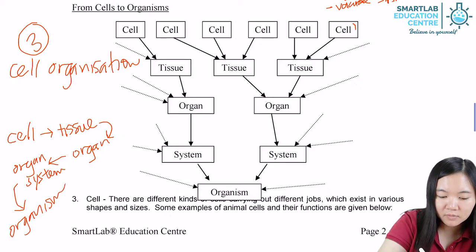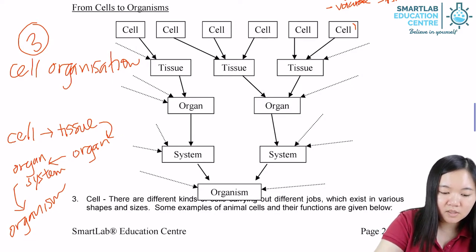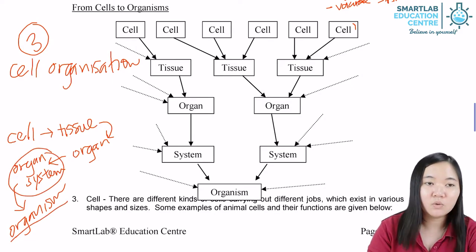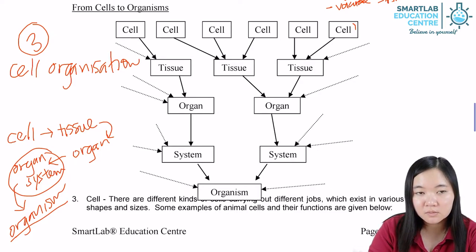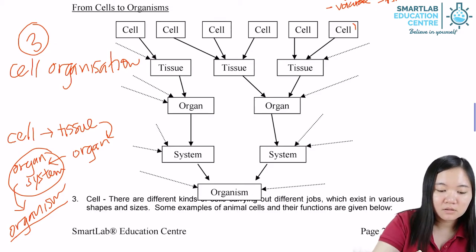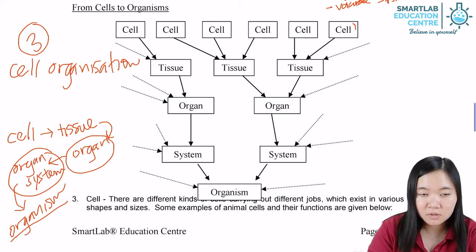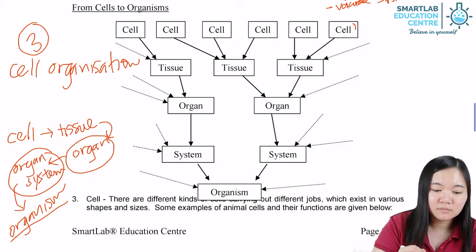That is you and me. In you and me, we have different systems such as the circulatory system, nervous system, and reproductive system. These systems are made up of organs — for example, the digestive system is made up of the stomach, esophagus, teeth, and so on.